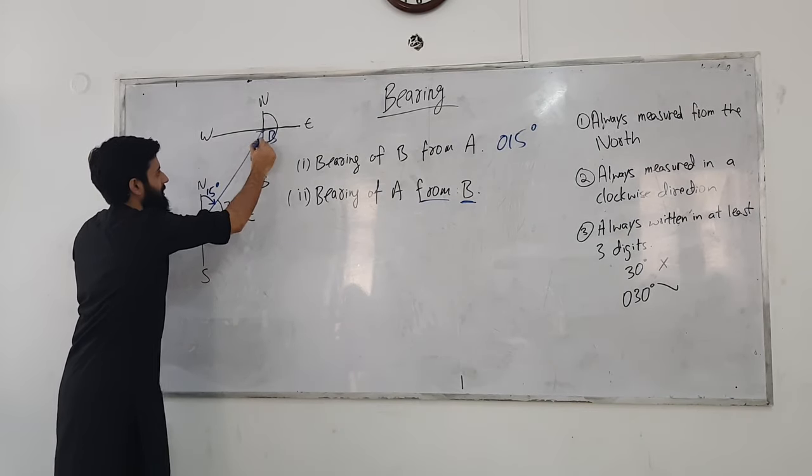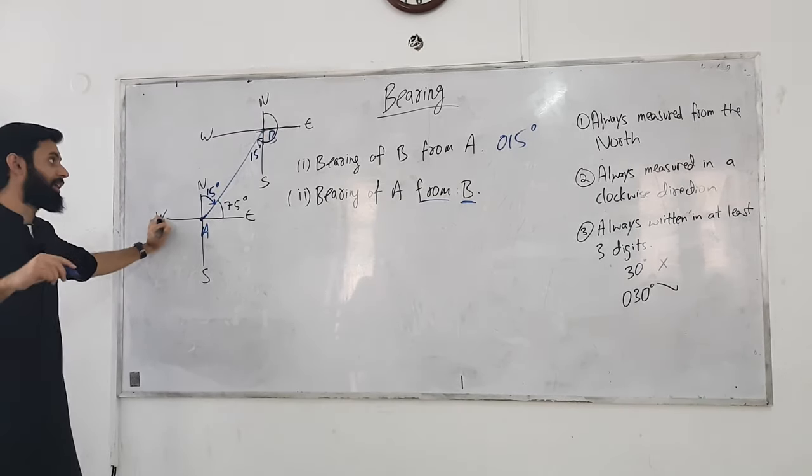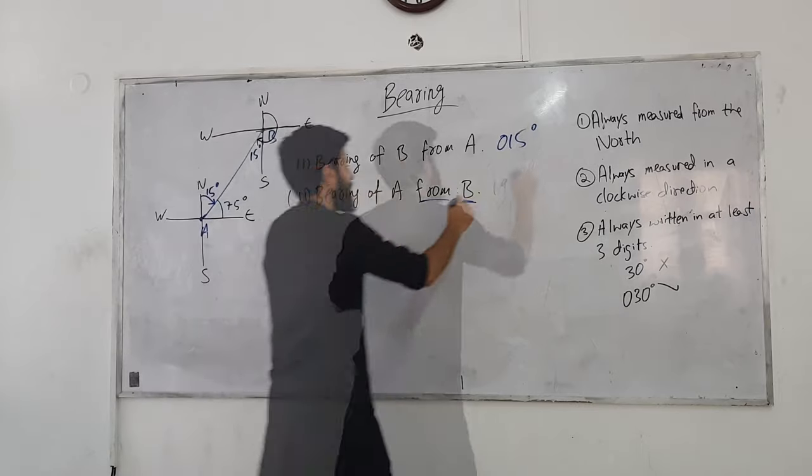So, if this is 15 degrees, so that means till here, this is north-south. What is the angle of north-south? 180 degrees. So, 180 plus 15, what do you get? 195 degrees.